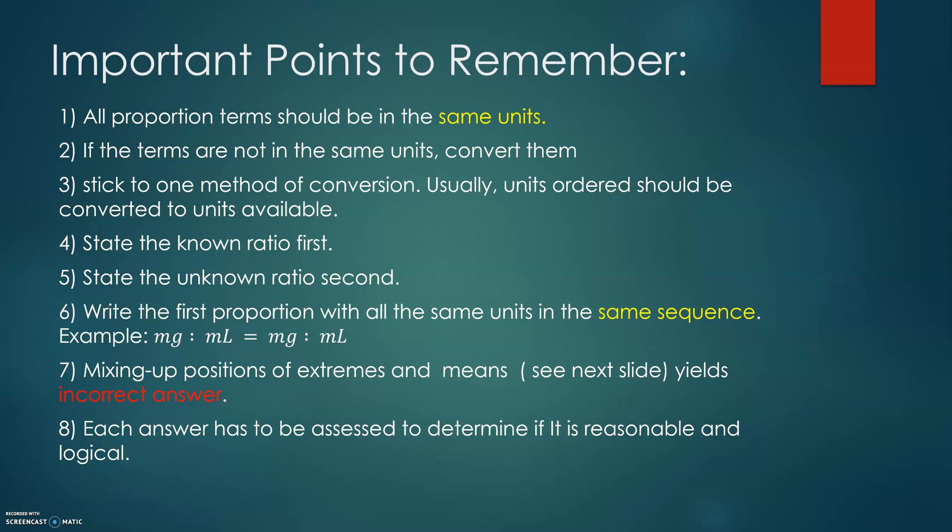State the known ratio first if you are starting the proportion. Known ratio means available, means dosage strength which is written on the label. And then the second ratio after the equal sign will be the unknown ratio. When we write the first proportion with the ratios, please remember that the units have to be in the same sequence. For example, if we write milligrams to milliliters or per milliliter, then the second ratio has to have the same order: milligrams to milliliters. If we are mixing up the positions, then it means we are getting an incorrect answer. Each answer has to be assessed. It has to be estimated and we need to look at whether the answer is reasonable.